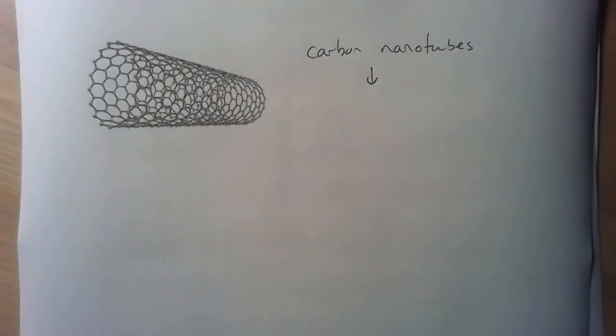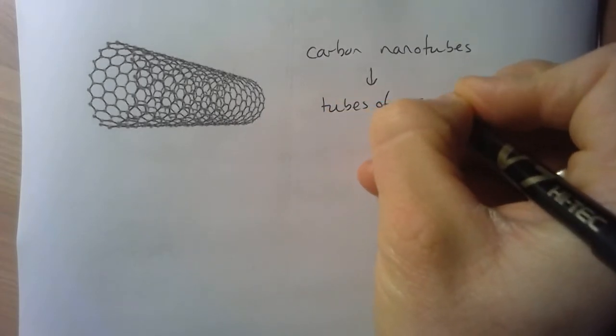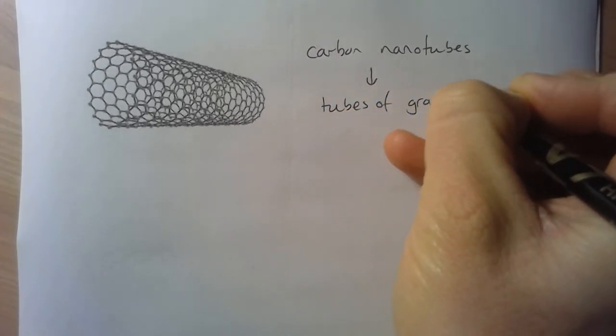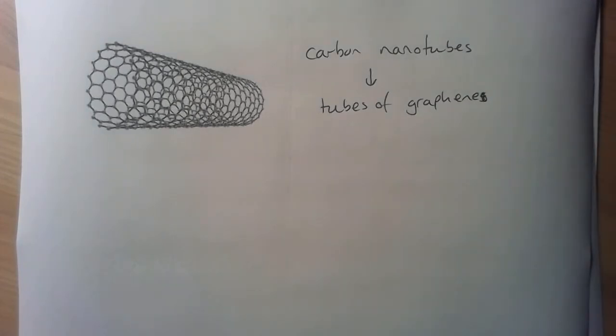We can imagine these either as being a tube version of a fullerene, or in fact, we can think of them as being tubes of graphene. So if we took graphene sheets and started wrapping them around, we end up with this tube-like structure.